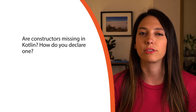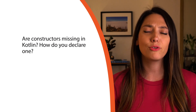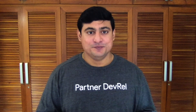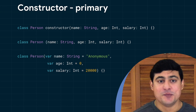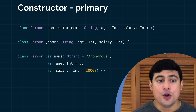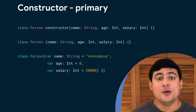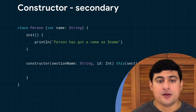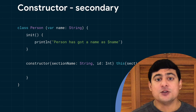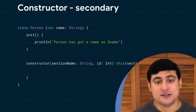Let's talk about constructors. Are constructors missing in Kotlin? How do you declare one? In Kotlin, there's a concept of primary and secondary constructor. The main difference is that the primary constructor will only do variable initialization — no other operation or logic can be added there. The primary constructor is part of the class header. The class can also declare secondary constructors, which are prefixed with the keyword constructor. You must call the primary constructor from the secondary constructor explicitly.